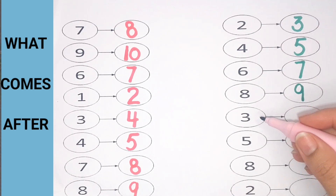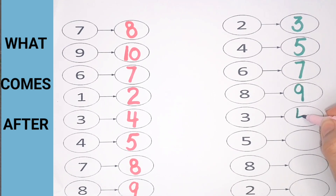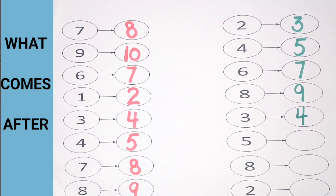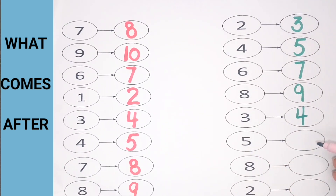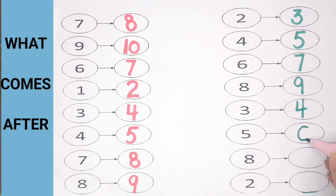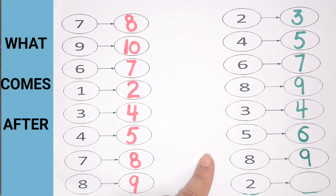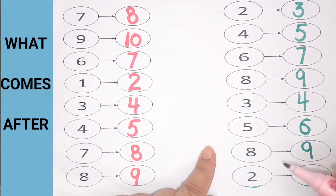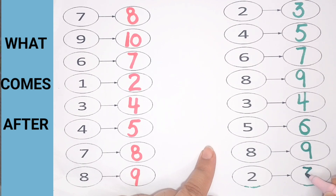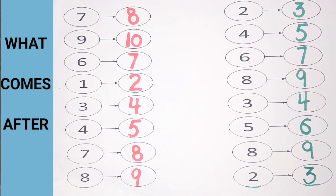Here is 3. What comes after 3? 4 — 4 comes after 3. What comes after 5? Do you know? Six — number six. What comes after eight? Can you guess? Nine — number nine comes after eight. Two. What comes after two? Number three — three comes after two.